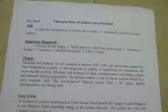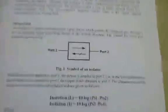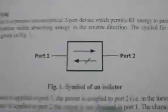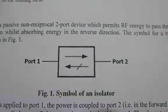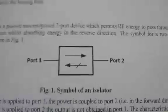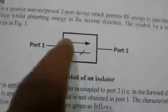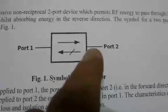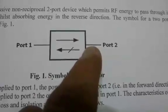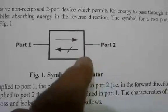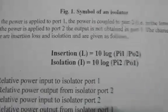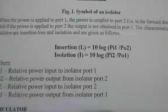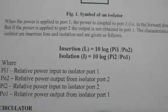The isolator is a two-port device. It allows the signal in only one direction — the forward direction — and it won't allow the signal in the reverse direction. The key characteristics of the isolator are insertion loss and isolation.